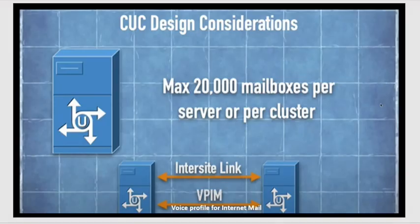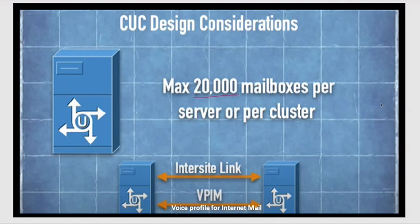Next, for CUC design considerations: in CUCM, 10,000 users are supported per server, so if you have two servers in a cluster, you have 20,000 users. In CUC, one node supports 20,000 mailboxes. CUC is used for mailboxes — for voicemail, for voice messaging. So 20,000 mailboxes are supported per server.